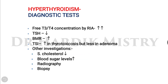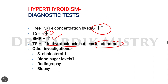Diagnostic tests for hyperthyroidism include: free T3 and T4 concentrations measured by radioimmunoassay technique — which will be increased — a decrease in TSH level, increased basal metabolic rate, and thyroid stimulating immunoglobulins. In adenoma cases, TSI levels decrease. Other investigations include decreased cholesterol level, increased blood sugar, radiography, and biopsy.